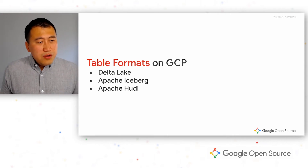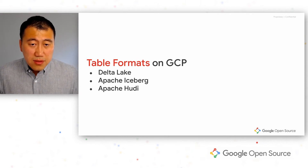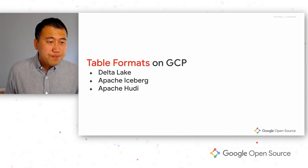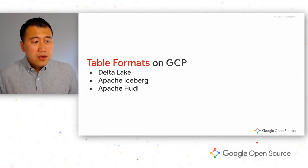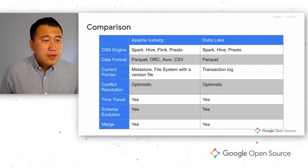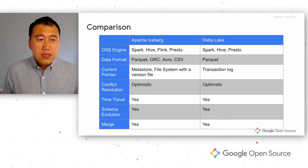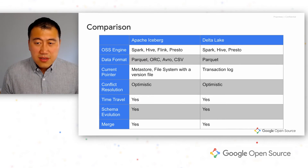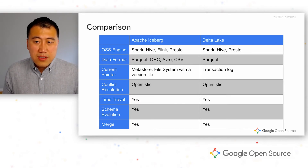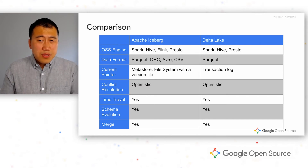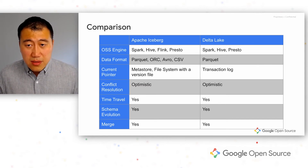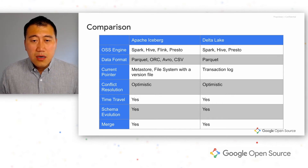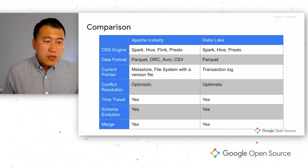There are a couple of table formats available on top of GCP. We ship Delta Lake, support Apache Iceberg, as well as Apache Hudi. Today we're going to mostly focus on Delta Lake and Iceberg. As you can see from the comparison, these two table formats have more similarities than differences. All of them support ACID transactions, schema evolution, structured data format, history rollback, and time travel access.